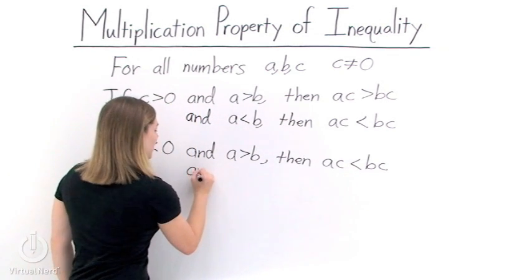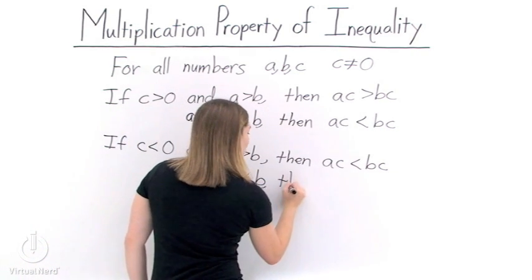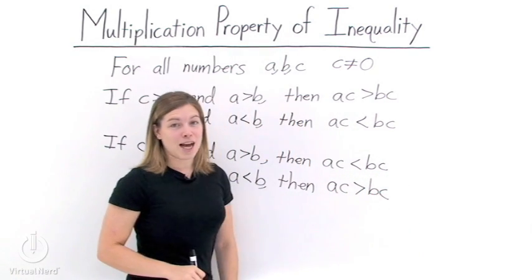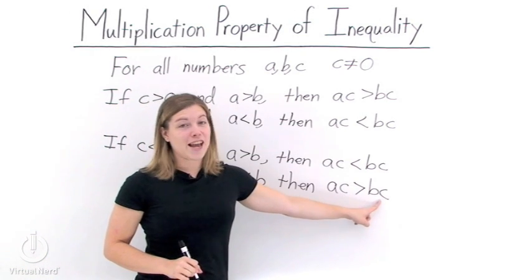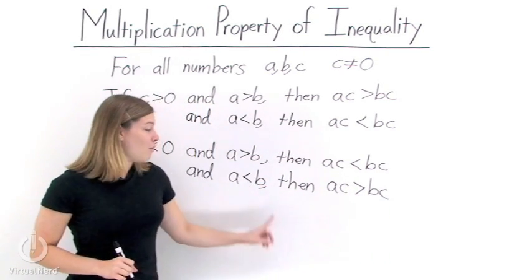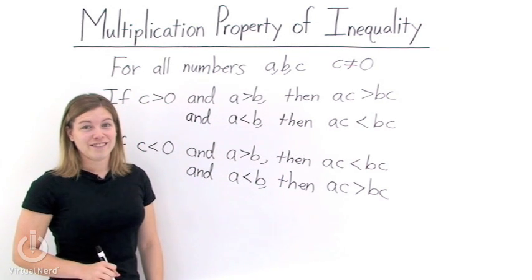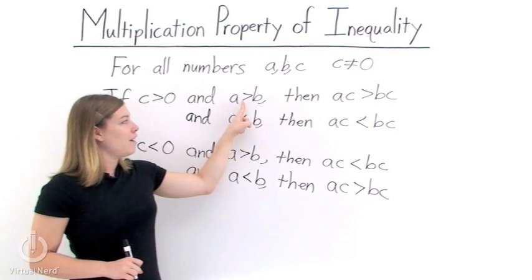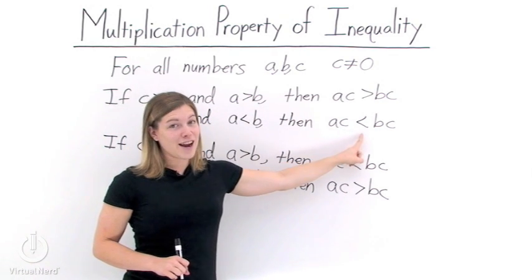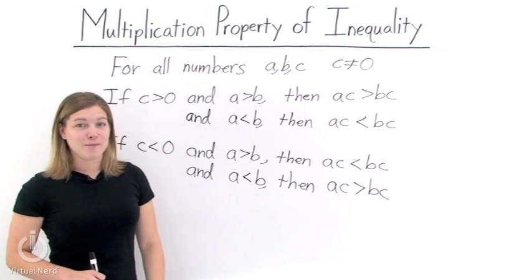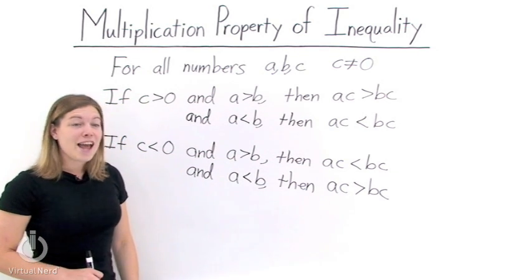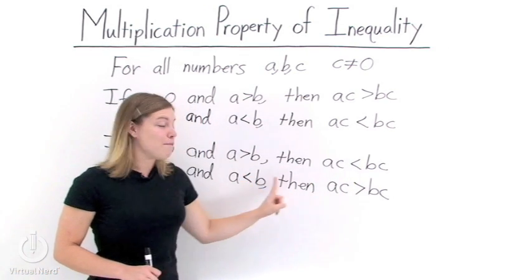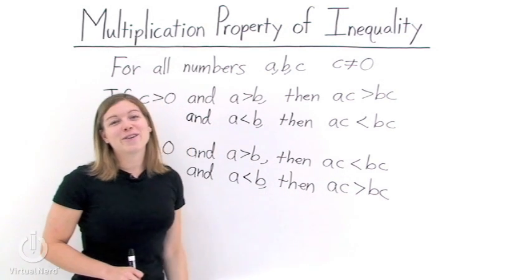Let's look at the other one. When a is less than b and c is a negative number, then a times c will be greater than b times c. Again, when we multiply by c on both the left and right-hand sides, we must flip over our inequality symbol in order to preserve the inequality. So the multiplication property of inequality shows that if c is a positive number, we do not need to flip the inequality symbol. But if c is a negative number, we must flip over our inequality symbol in order to preserve the inequality.